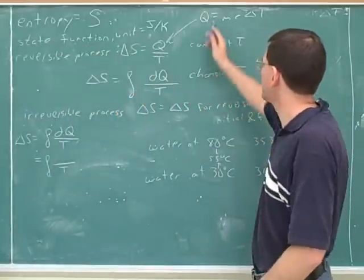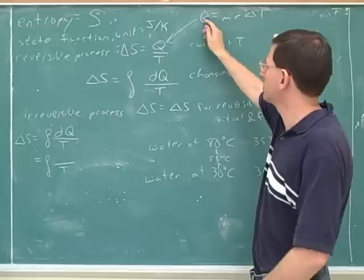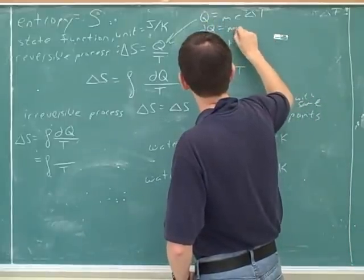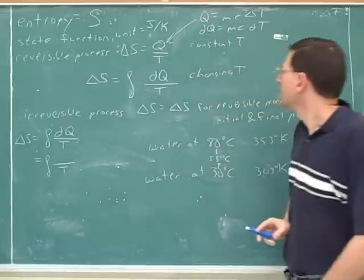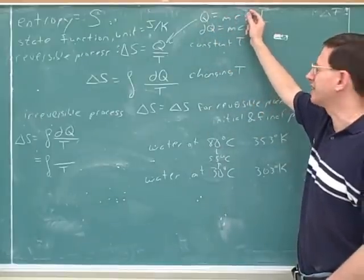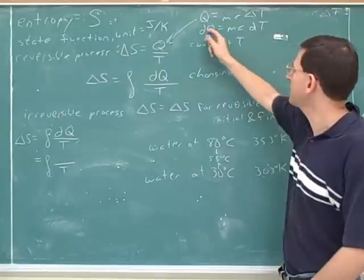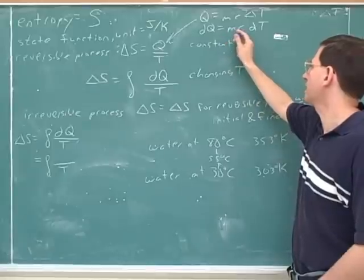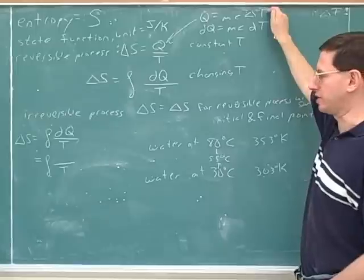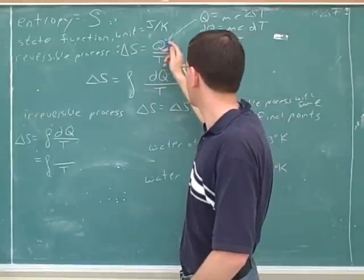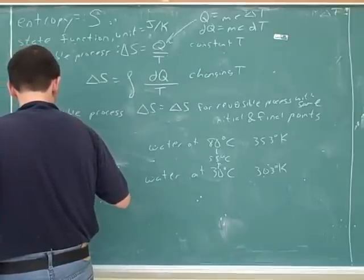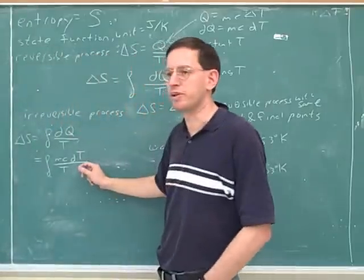Then we have to do a little bit of calculus here. Here's the formula we would have used in our approximate approach. If we look at the entire change, the entire heat is MC times the entire change in temperature. But if you just focus on the heat over a very small interval, that's going to be the mass times C times that small change in temperature. This is the differential form of this equation, and we would plug this in for dQ.